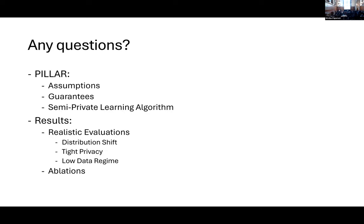So, to conclude, we have introduced Pillar. It is an extremely simple algorithm. We can provide some guarantees based on two very simple and reasonable assumptions, and it is a semi-private learning algorithm that tries to exploit more efficiently the availability of public and unlabeled data. Our results are performed on realistic settings. We consider settings in which there is distribution shift. We focus on tight privacy regimes, and we focus on cases in which there is no availability of data. Do you have any questions?